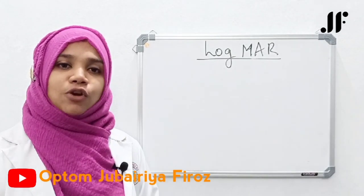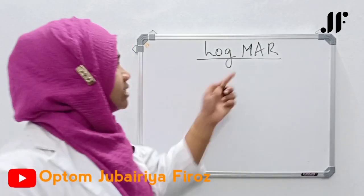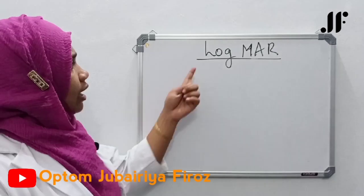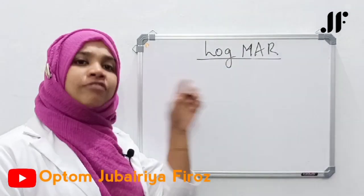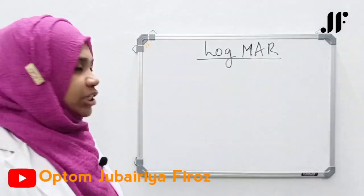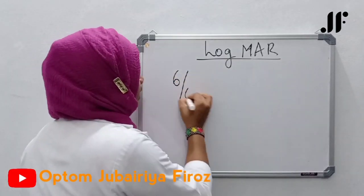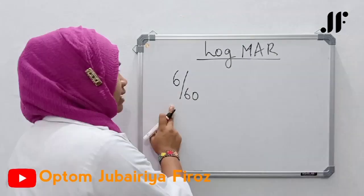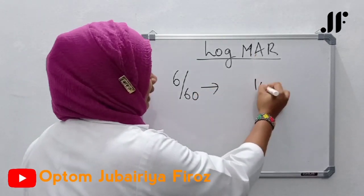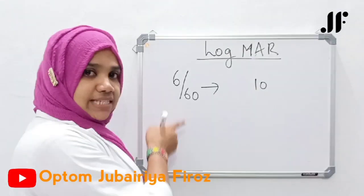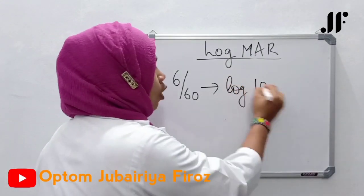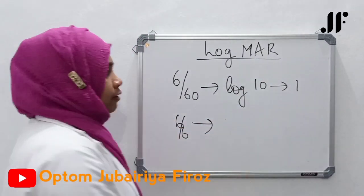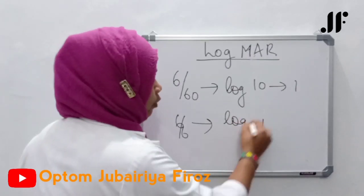If you consider the Snellen acuity charts, Minimum Angle of Resolution - in the previous video, what is Minimum Angle of Resolution? In that Minimum Angle of Resolution, log value is a log value notation. For example, 6 by 60 visual acuity log value is - 6 by 60 Minimum Angle of Resolution is 10 because in the reciprocal of visual acuity, 60 by 6 becomes 10. Log value, log 10 is equal to 1. 6 by 6 visual acuity, Minimum Angle of Resolution is 1. Log value is 0.